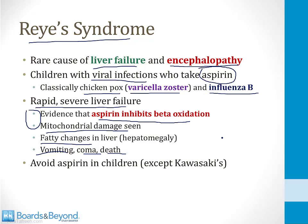The only time children are given aspirin now is in Kawasaki's disease, which is a rare vasculitis. It responds very well to aspirin, and it's such a dangerous condition that we give aspirin to children even though there may be a risk of Reye syndrome.